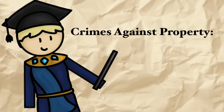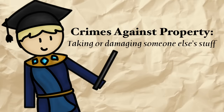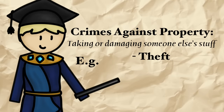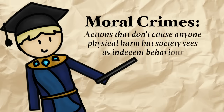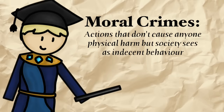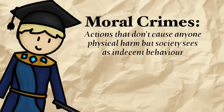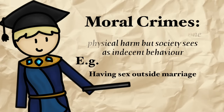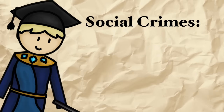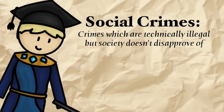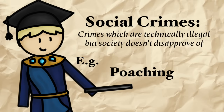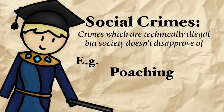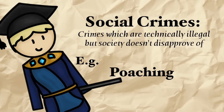Crimes against property involve taking or damaging someone else's stuff, such as theft, robbery, or arson. Moral crimes are actions that don't cause anyone physical harm, but things a society sees as indecent behaviour, such as having sex outside marriage. Social crimes are crimes which are technically illegal but society doesn't disapprove of — for instance, when poaching first became a crime, as hunting had always been legal, most people didn't see anything wrong with poaching, making it a social crime.